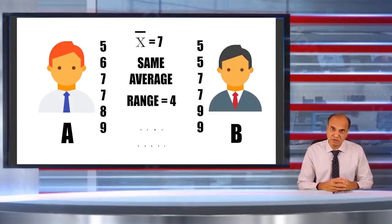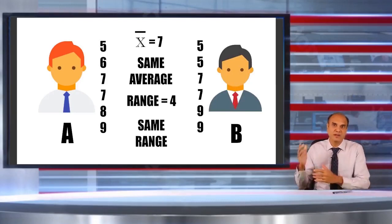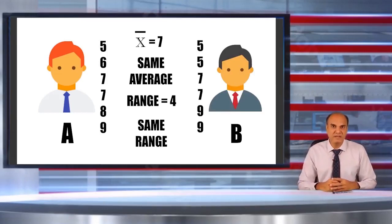If you calculate the range also, range is same for both: 9 minus 5, that is 4, and for vendor B also 9 minus 5, that is 4. So both average and range fail to tell you that there is a difference between the variation in vendor A and B. So what should we do?